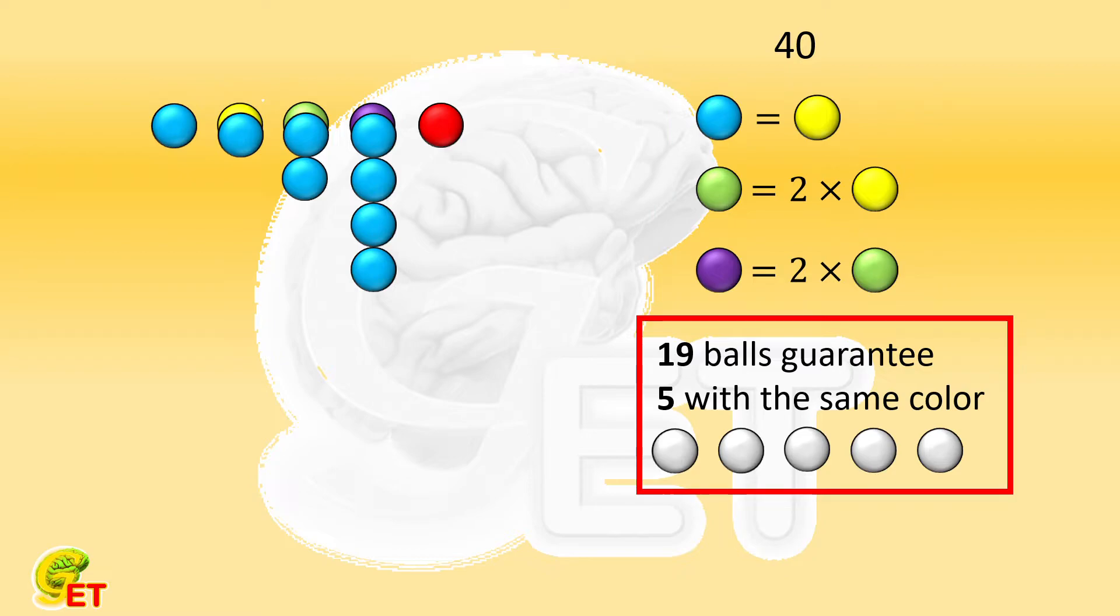19 balls guarantees at least 5 balls with the same color. Normally, if there are enough balls of each color, 21 balls can guarantee that at least 5 balls have the same color.